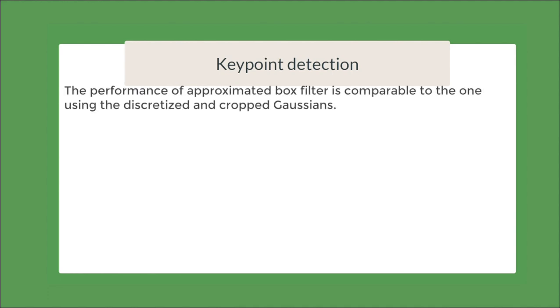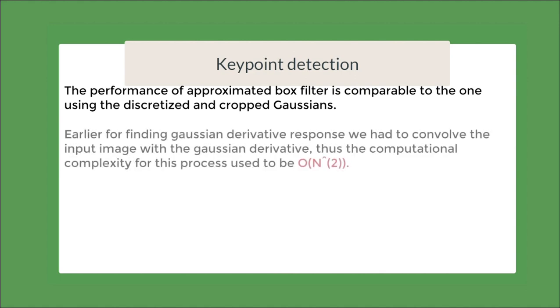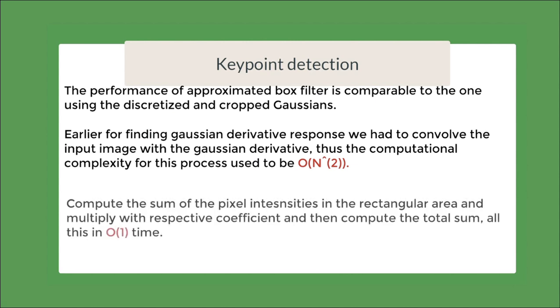The performance of the box filters is quite comparable to the cropped and discretized Gaussians. Now here, the use of integral images is going to give us quite an edge in terms of computational efficiency. Earlier, for finding Gaussian derivative response, we had to convolve the image with the filter whose computational complexity was around O(n^2). But now, due to the use of box filters, we can just compute the sum of pixels intensities in the rectangular area, multiply it with its coefficient and find the total sum. All this took just O(1) time.